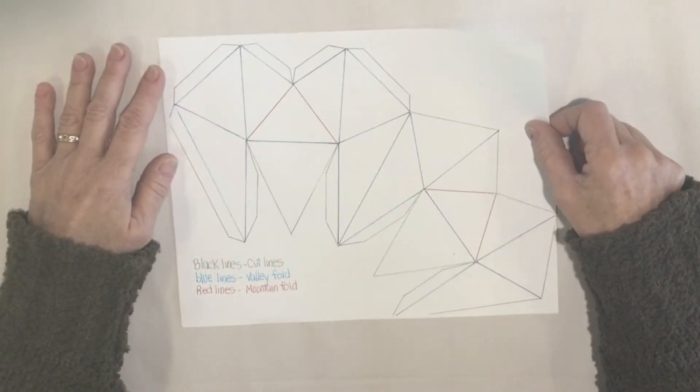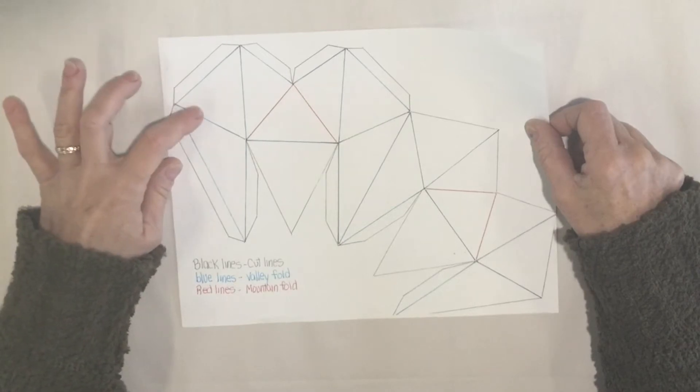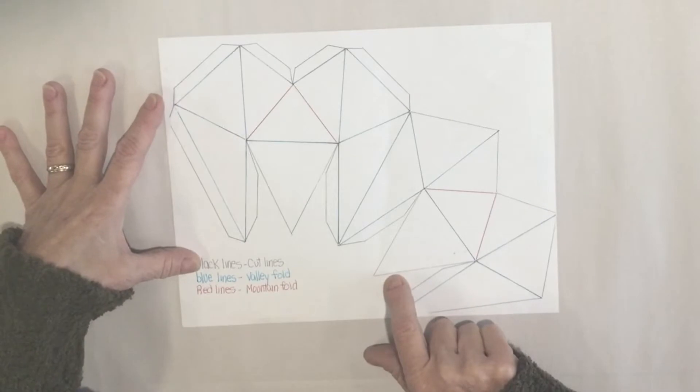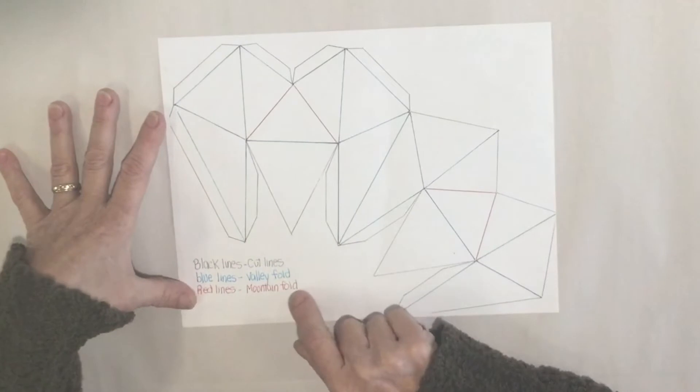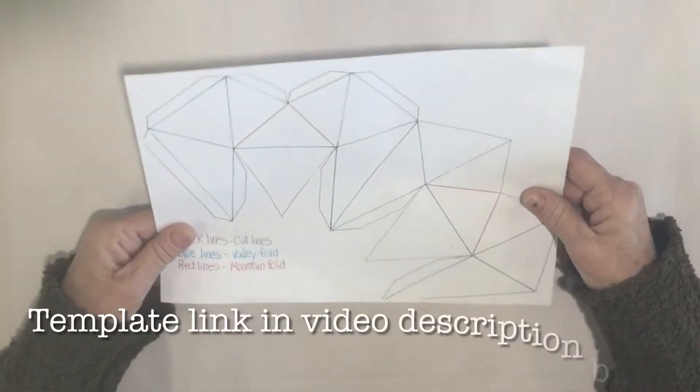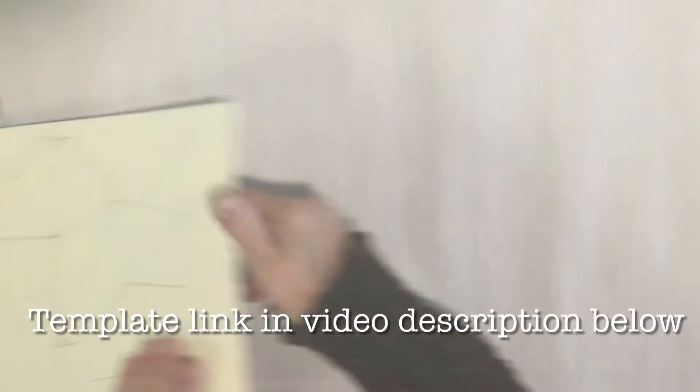I have colors on it so if you print it in color it makes it a lot easier. This is going to show you your black lines are your cut lines, your blue lines are your valley folds which go in like a valley, your red lines are your mountain folds that go up like a mountain.